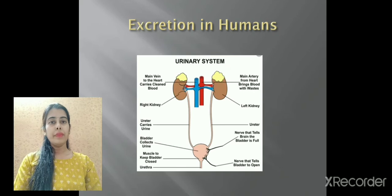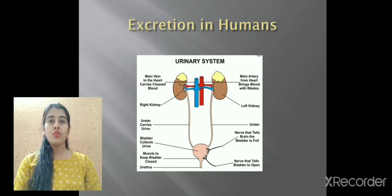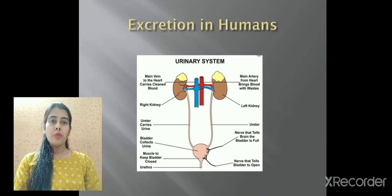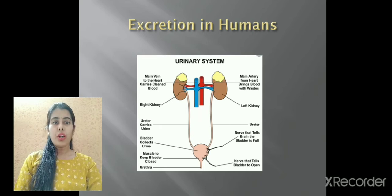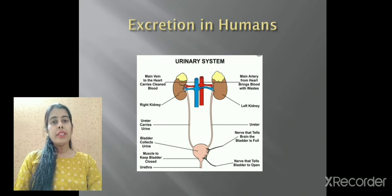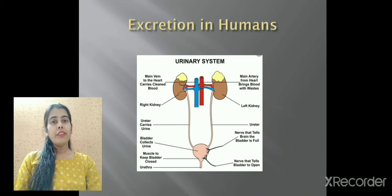Now, how do kidneys work? Kidneys consist of a pair - that is two. Every human body has a pair of kidneys which are connected to the urinary bladder through two tubes called ureters. These kidneys consist of tiny filtering units called nephrons.